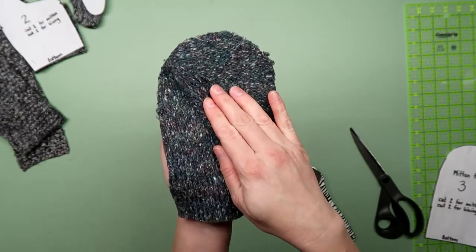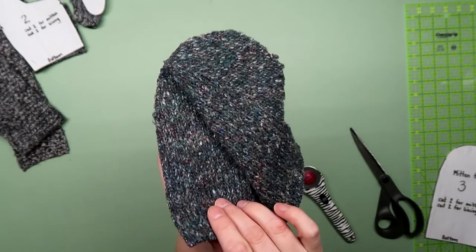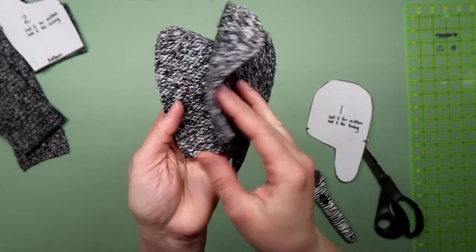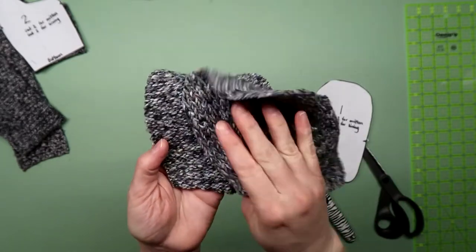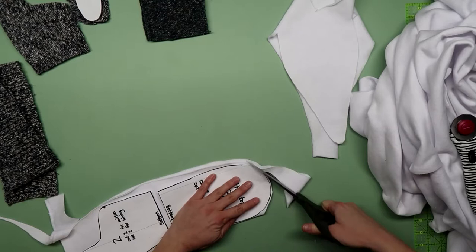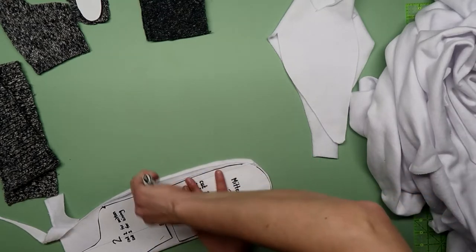It may be a little hard to see on camera but there is a right and wrong side to the sweaters. You'll want to make sure you know which is which. Mark with a pin on the right side if you want. Cut out all the same pieces for the lining fabric. You can use an old sweatshirt for this.